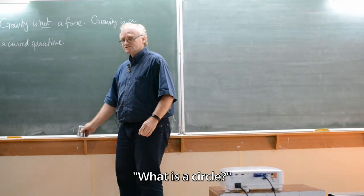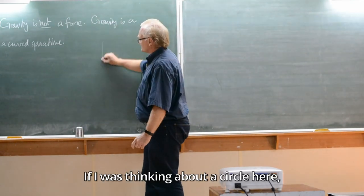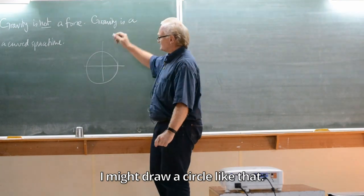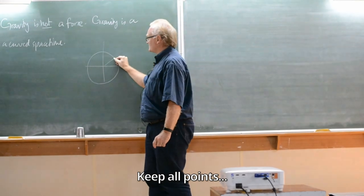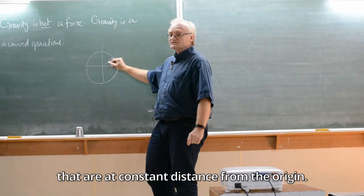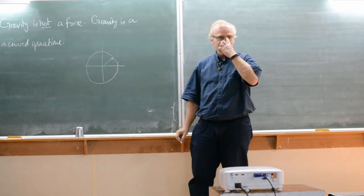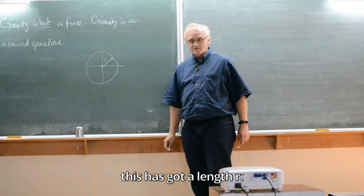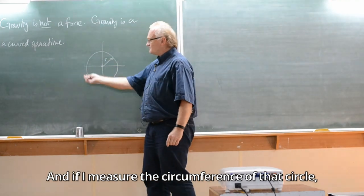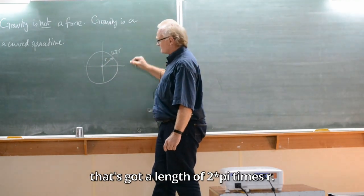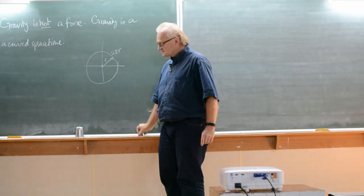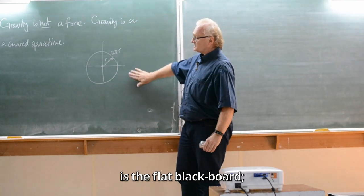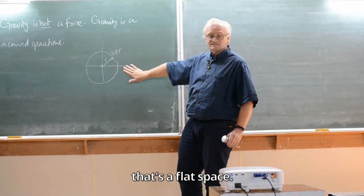Now the first thing that we might think about is what is a circle. If I was thinking about a circle here, I might draw a circle like that. How did I get my circle? It's all points that are a constant distance from the origin. If I measure the distance from the origin to the edge of the circle, this has got a length of r. If I measure the circumference of that circle, that's got a length of 2πr. Now this is the space that I'm thinking about here, the flat blackboard. That's a flat space.